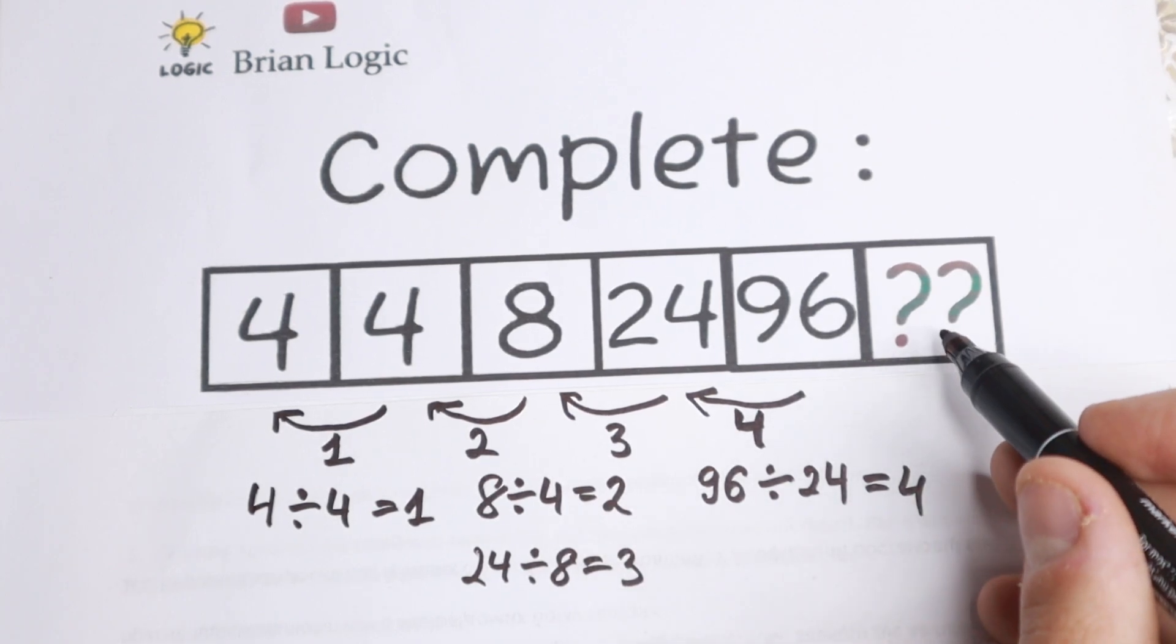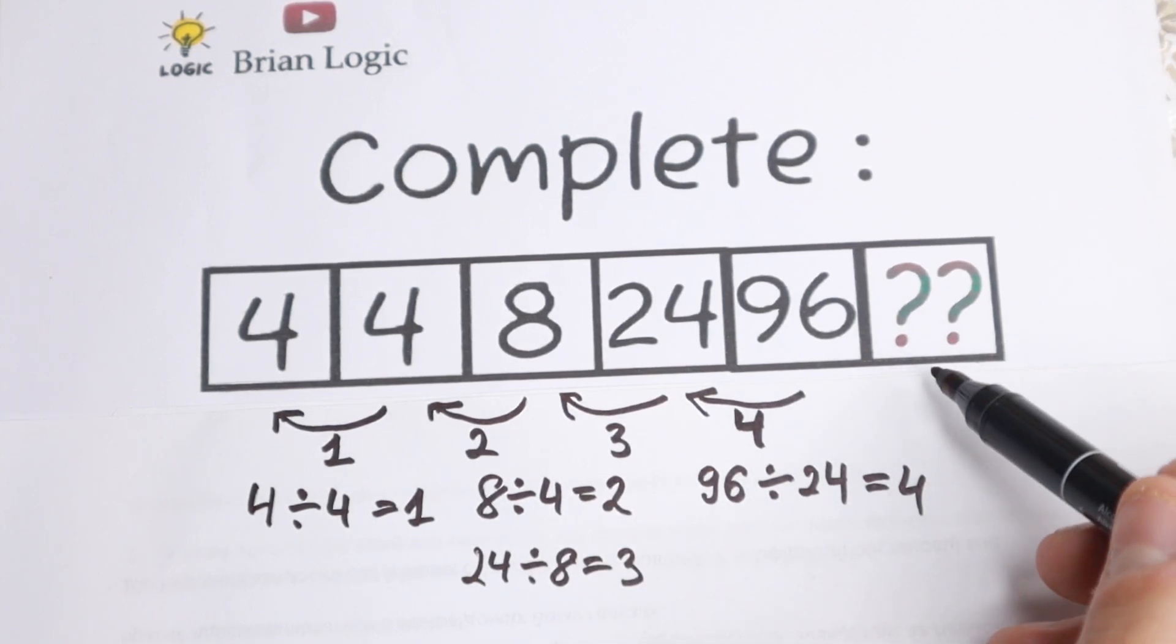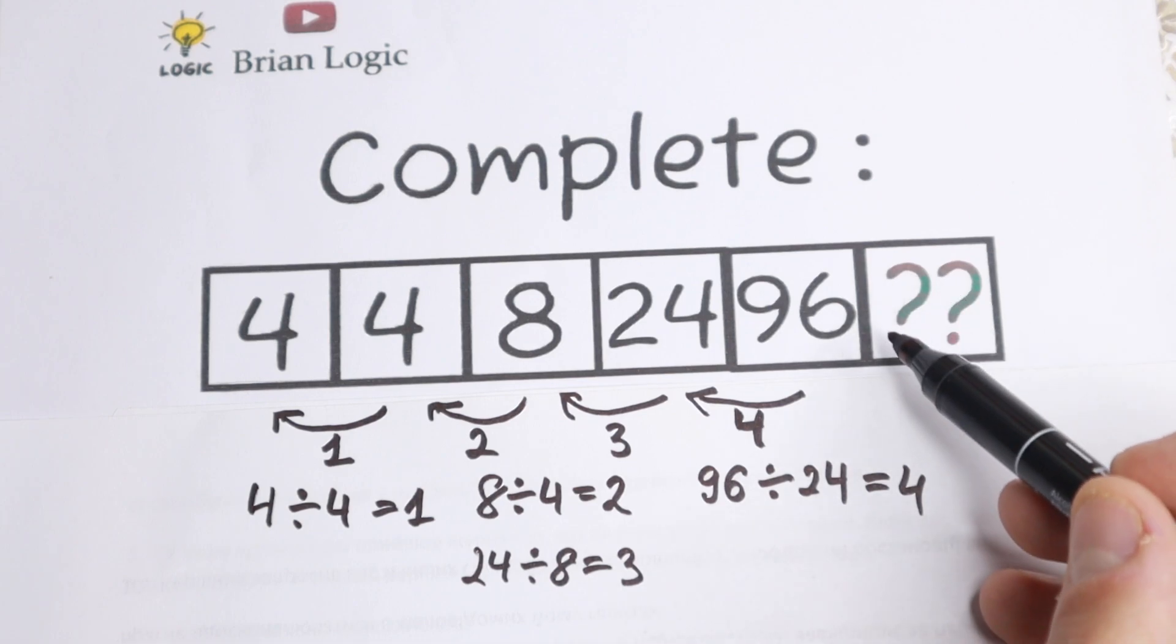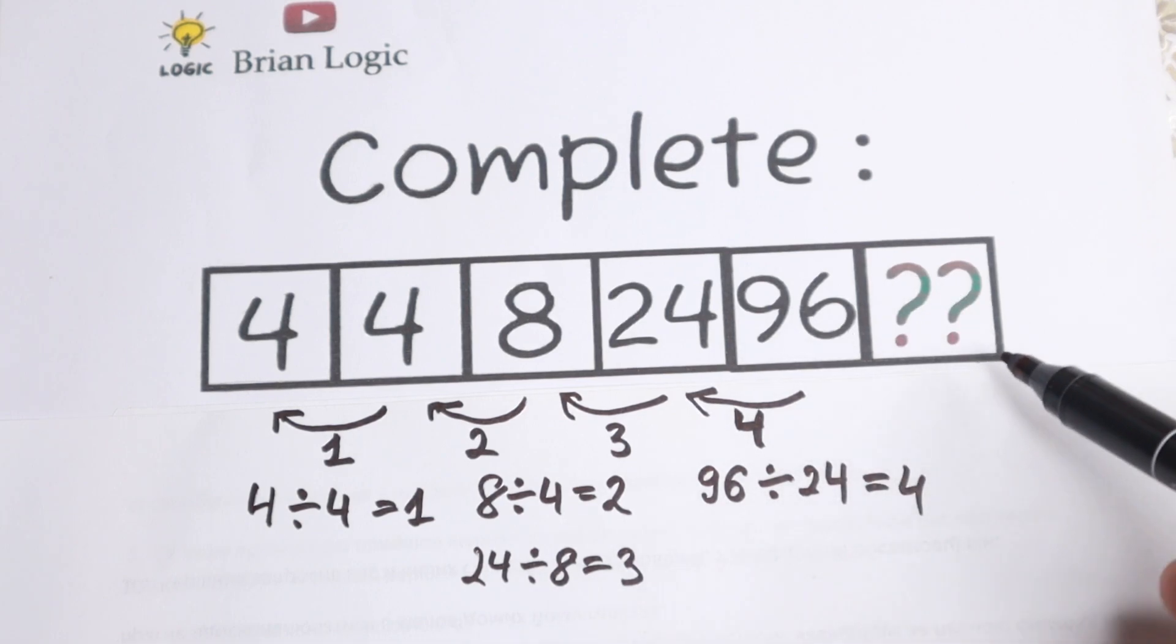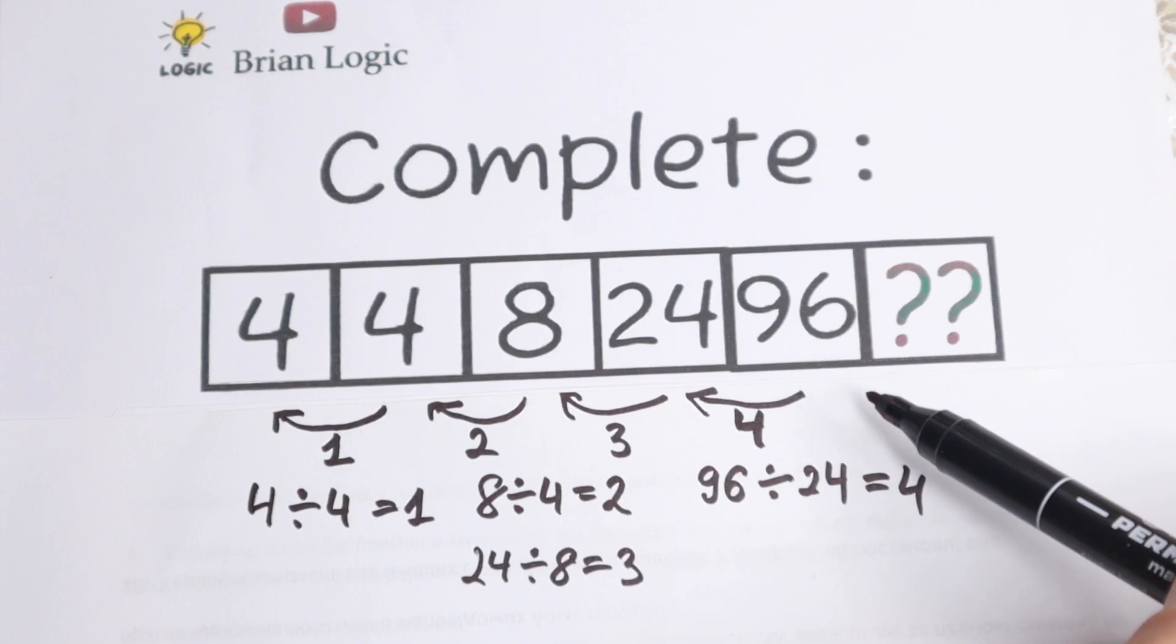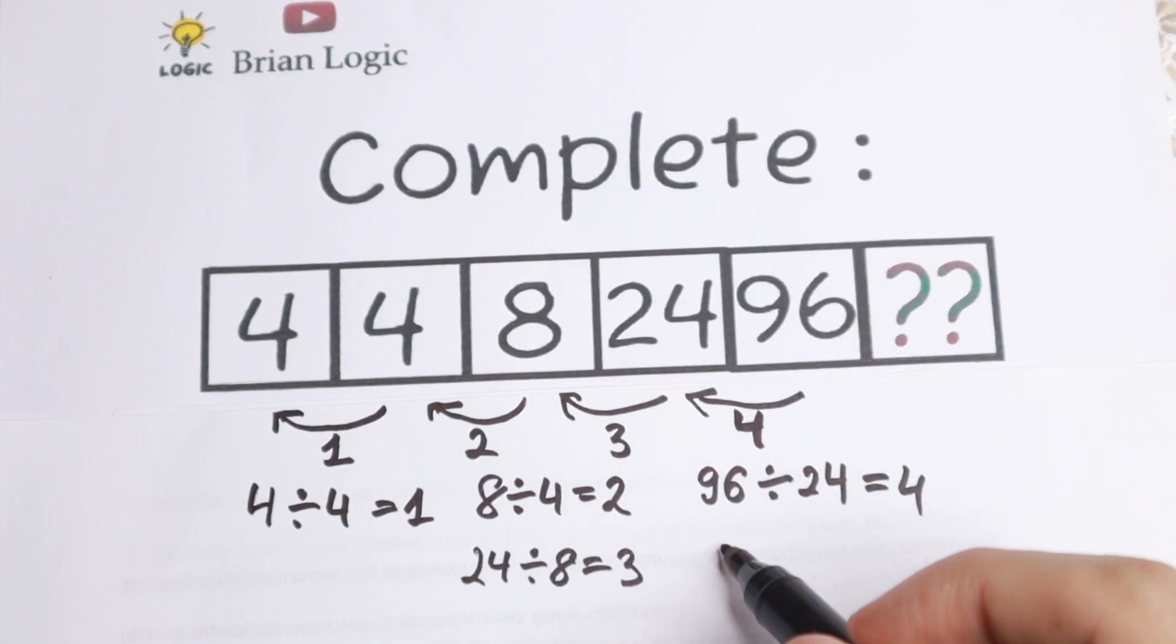And as you can see, if we want to find the last number, we need to multiply this number by five, and we will have our final number.